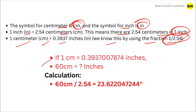If 1 cm equal to 0.3937007874 inches, 60 cm equal to how many inches? The calculation is 60 cm divided by 2.54, equal to 23.622047244 inches.